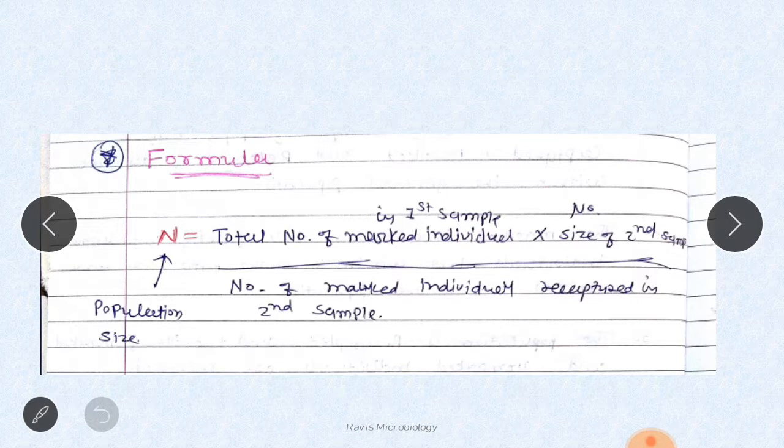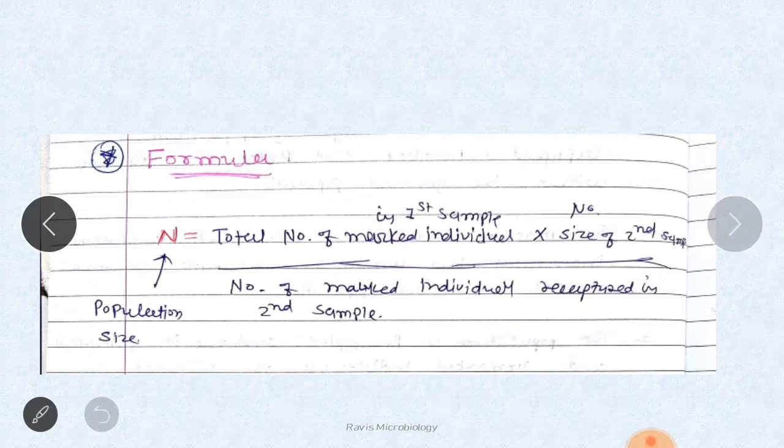This is the proper formula: N (population size) equals the total number of marked individuals in the first sample multiplied by the size of the second sample, divided by the number of marked individuals we got in the second sample.